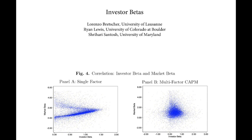Just to conclude: the point we're trying to make is that covariance risk at the portfolio level seems to aggregate and matter for asset prices in a way that Markowitz portfolio theory would predict. It's just that the portfolio in question isn't the market — it's the portfolios that people actually choose to hold. We think this sheds light on how much risk premium exists because of lack of diversification, and that it could be incorporated into demand frameworks. Thanks.